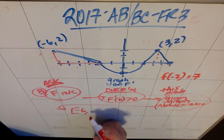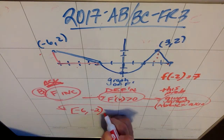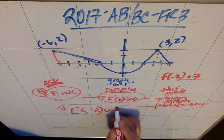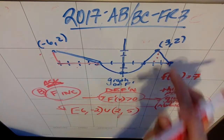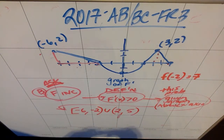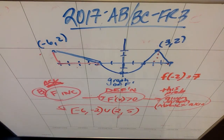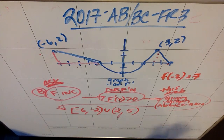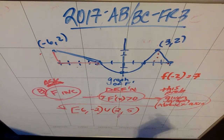By visual inspection, the given graph is above the x-axis on the interval from negative six inclusive to negative two, and then again from two to five. The AP would like brackets on both endpoints; technically f prime equals zero at those endpoints so f is neither increasing nor decreasing there, but the AP prefers closed brackets. The answer is the intervals negative six to negative two and two to five.